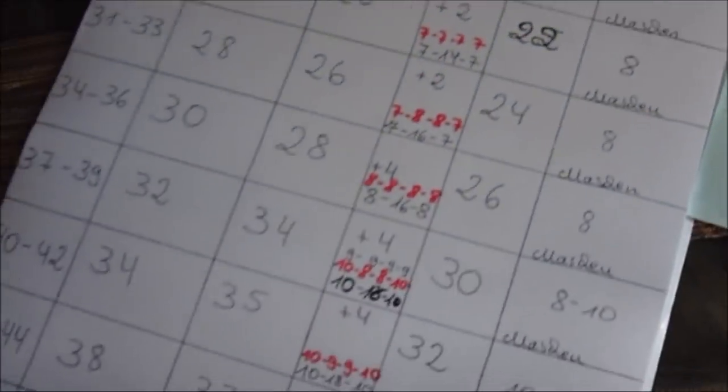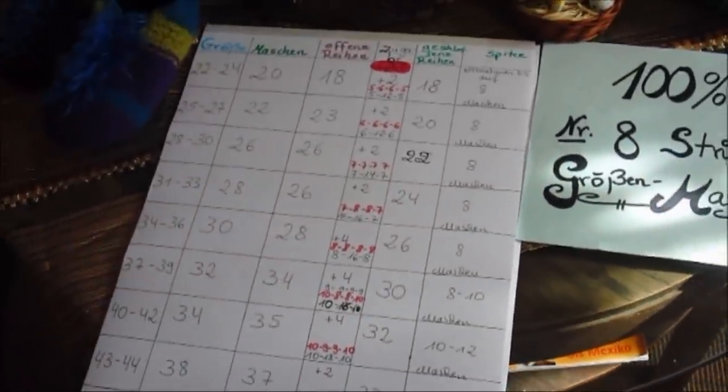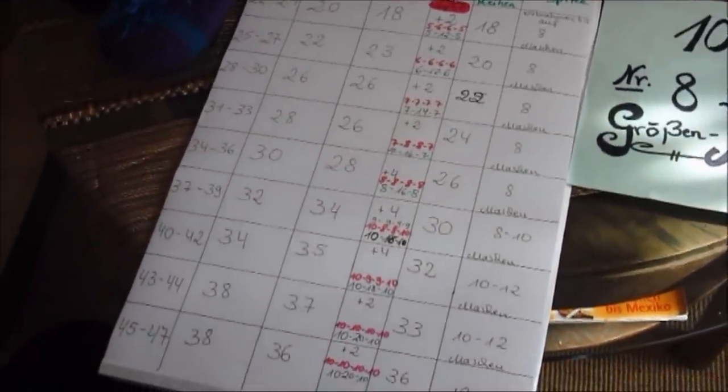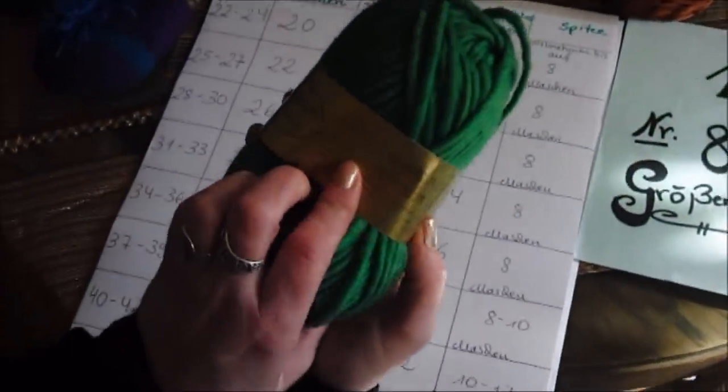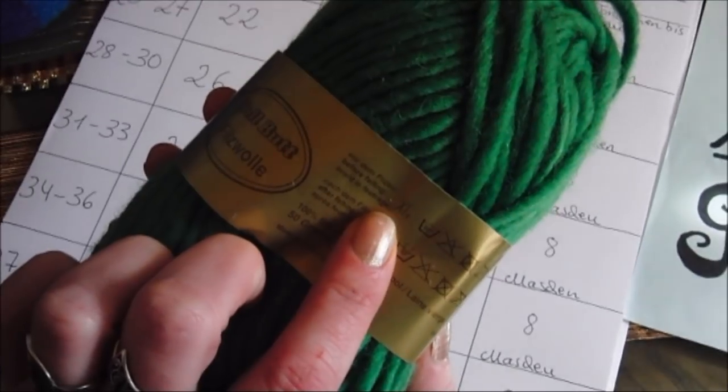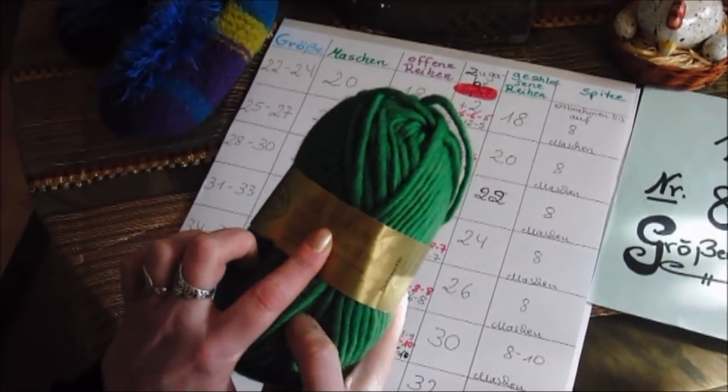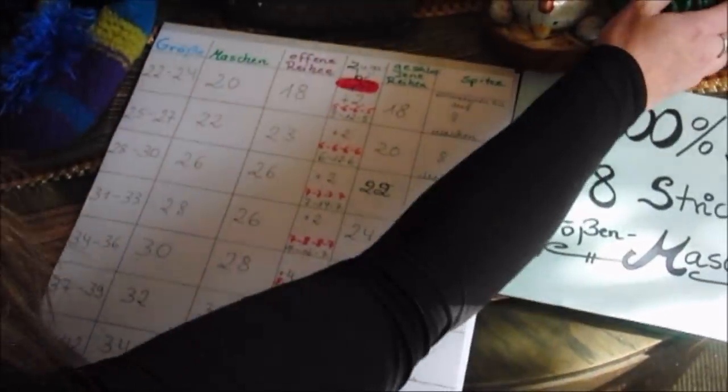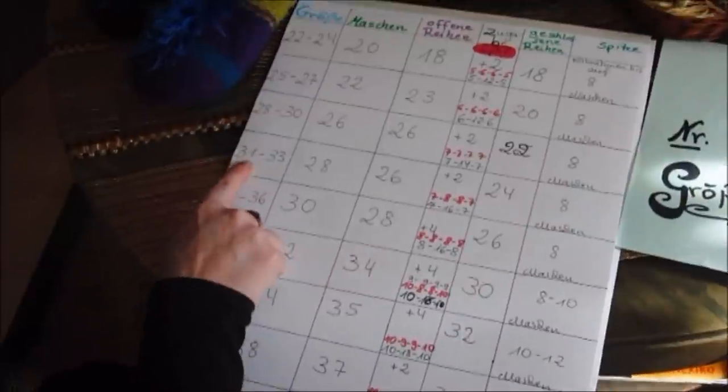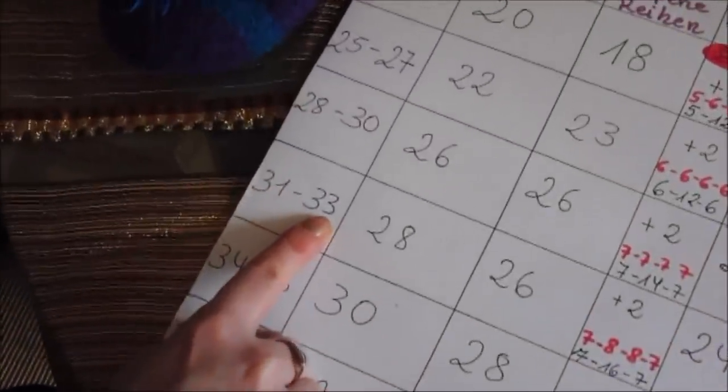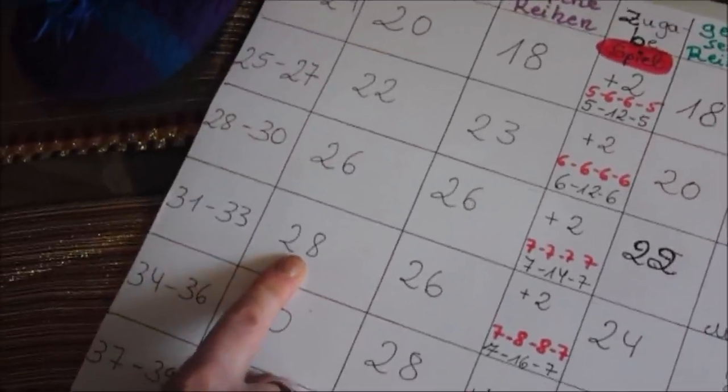Diese Tabelle bezieht sich auf 100% Filzwolle, Schurwolle, die dickste die ihr finden könnt, und 8er Stricknadeln. Ich nehme jetzt einfach mal die Größe 31 bis 38 als Beispiel. Ihr müsst 28 Maschen anschlagen.